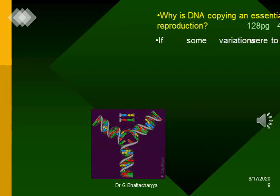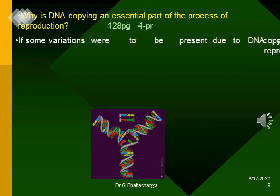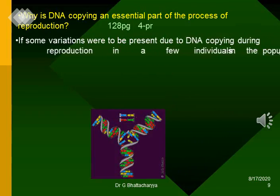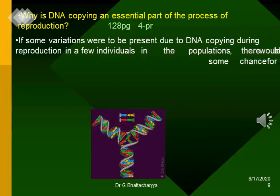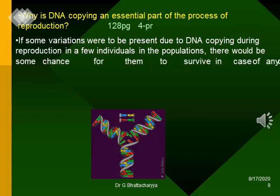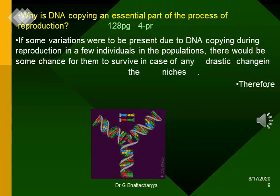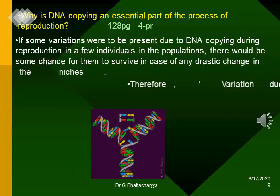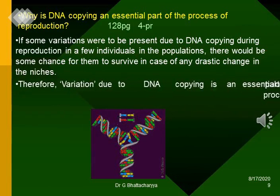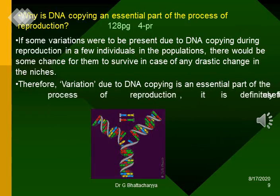Why is DNA copying an essential part of the process of reproduction? If some variations were to be present due to DNA copying during reproduction in a few individuals in the population, there would be some chance for them to survive in case of any drastic change in nature. Therefore, variation due to DNA copying is an essential part of the process of reproduction. It is definitely useful for the survival of species over time.